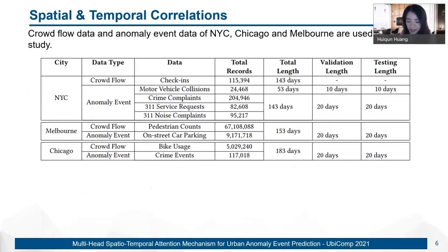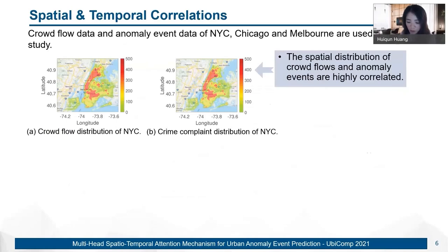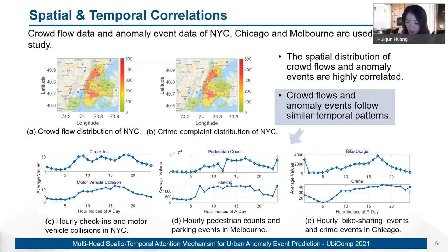In this study, we utilize the crowd flow data and anomaly event data of New York City, Chicago, and Melbourne to conduct our data analysis and experimental studies. Figures A and B show the spatial distributions of crowd flows and the anomaly events in New York City. We can find the spatial distributions of crowd flows and anomaly events are highly correlated. We also show temporal patterns of hourly crowd flow and anomaly events of three cities. The figures show that crowd flows and anomaly events follow similar temporal patterns.